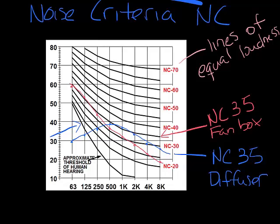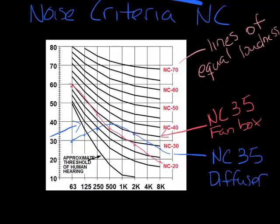Now these two NC curves look very different, but they're both about the same NC, about an NC 35. But you can imagine that these two would sound very different. One would be a low pitch sound, one would be a higher pitch sound. So what an NC graph tells you is how loud the sound is, not necessarily what it'll sound like.